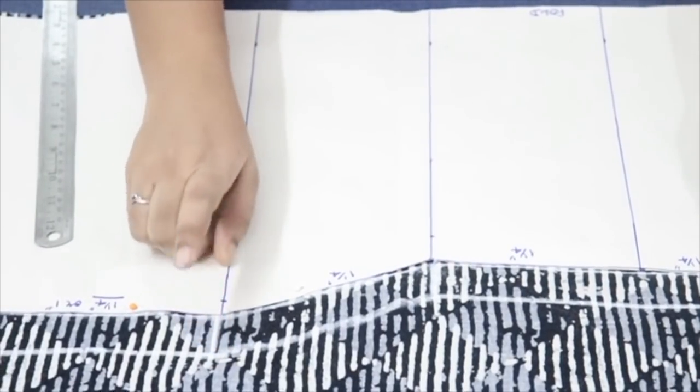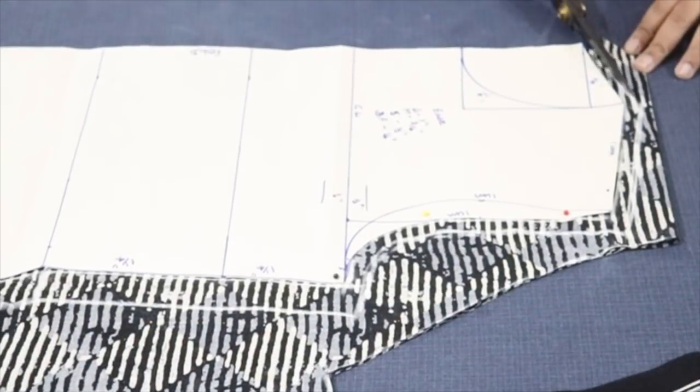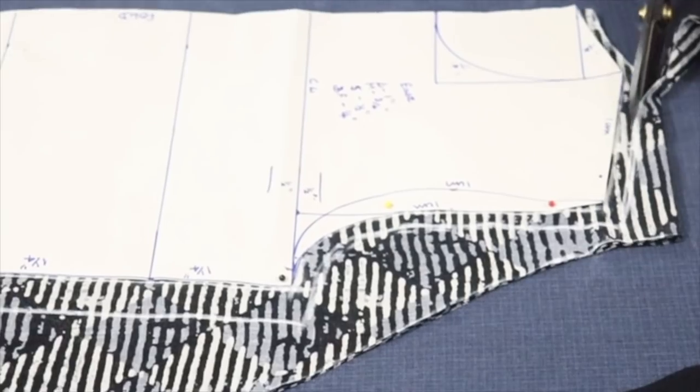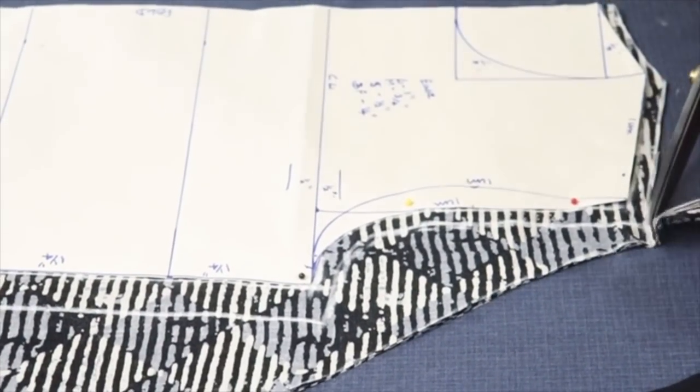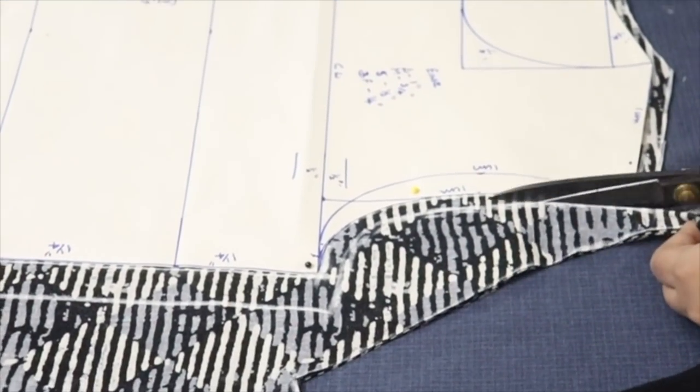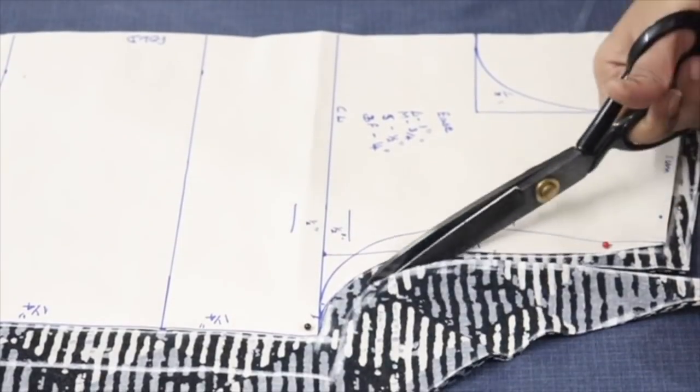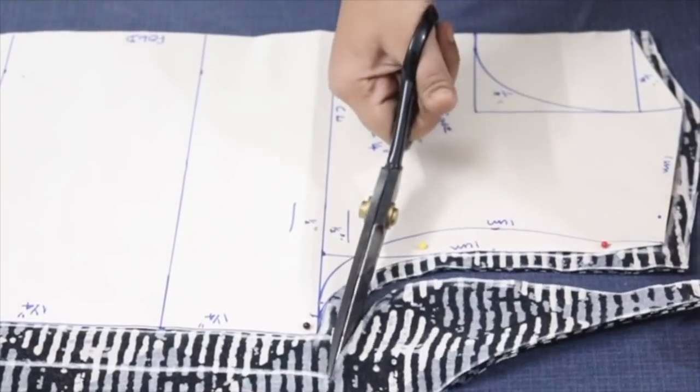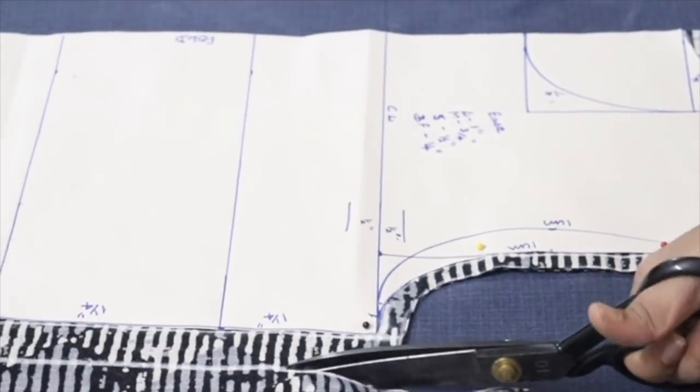So draw the line to identify the waist, chest and the hip part. So these places you have to give the notches. While joining front and back the both the notches should get aligned. Cut it on the seam allowance line.